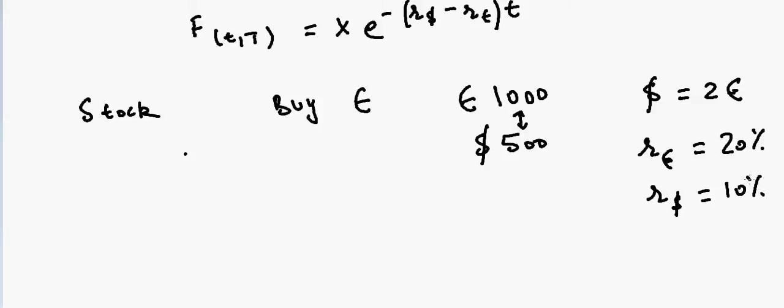So now what will happen is that suppose if you buy it right now - it's in euros, so you need to pay 500 dollars right now. So this 500 would have become 550 in one year. So this is zero, this is one year.